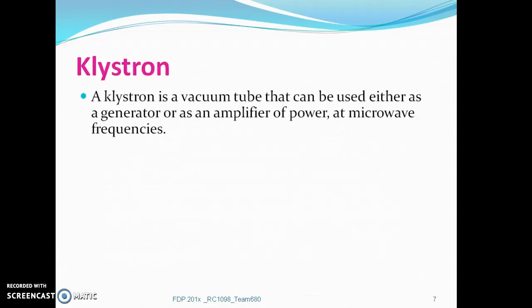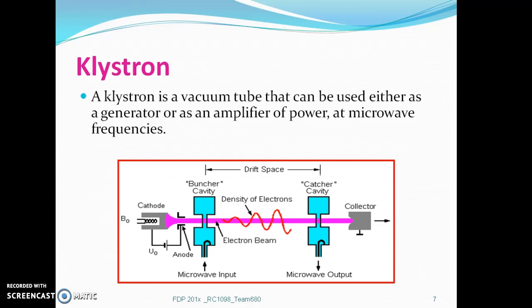What is a Klystron? It is a vacuum tube that can be used either as a generator or an amplifier of power at microwave frequencies. This is the schematic of a Klystron which we will be discussing later.